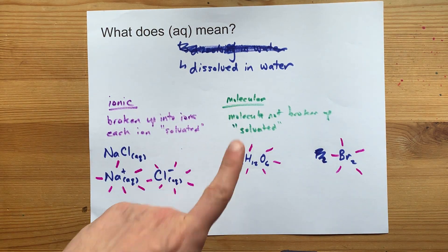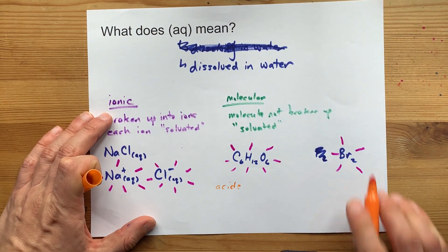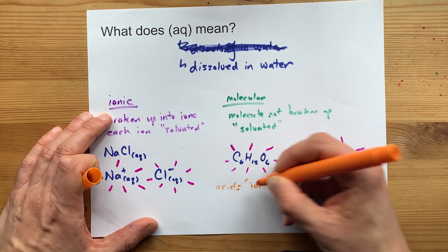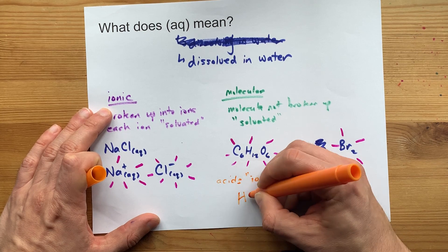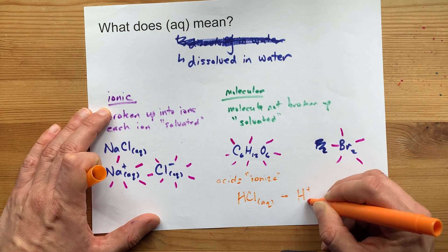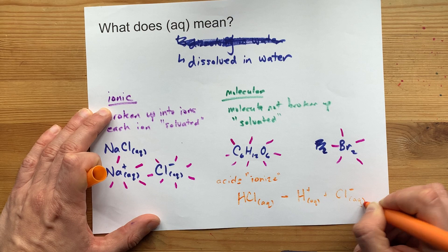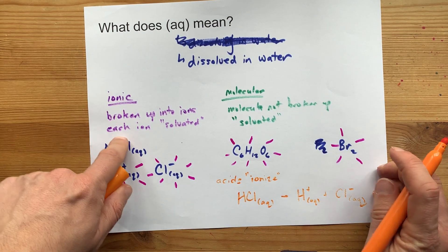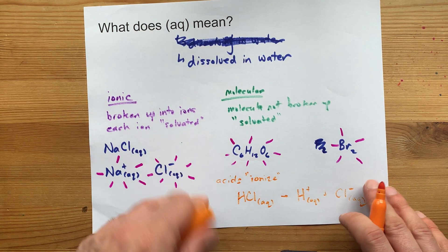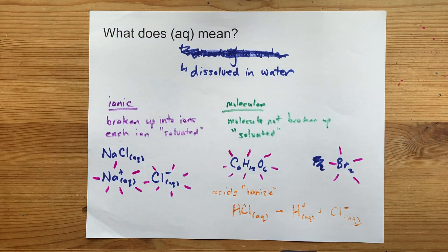It is worth mentioning that acids, even though they are molecular compounds, will break up and ionize. The classic example is hydrochloric acid — when it dissolves in water, it gives you H⁺ and Cl⁻, which should remind you of what ionic compounds do, but it had been molecular originally. Acids are the only example I know of that happening. Thanks for sticking with me, and best of luck.